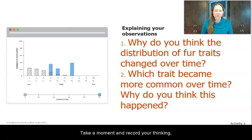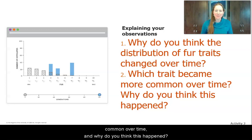Take a moment and record your thinking so you could write this down or share with your partner. Why do you think the distribution of fur traits changed over time? Which trait became more common over time? And why do you think this happened?